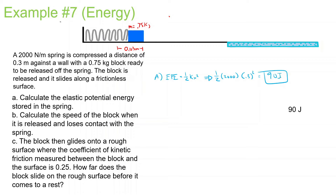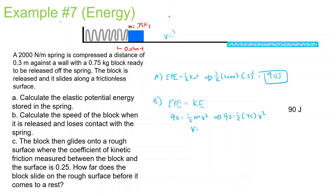Part B: calculate the speed of the block when it is released and loses contact with the spring. All this elastic potential energy, once it loses contact with the spring, is going to turn into kinetic energy. So this 90 joules turns into one half mv squared: 90 equals one half times mass 0.75 times v squared. 90 times 2 divided by 0.75, then find the square root, and we get 15.5 meters per second.